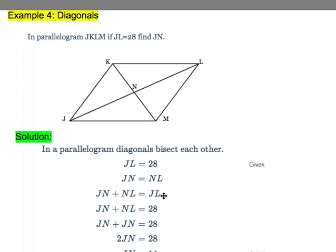Once we have this, we're just plugging in that JN plus NL equals 28. But because they're equal to each other, we can just say JN plus JN is equal to 28. And when we combine these, we get 2JN is equal to 28.